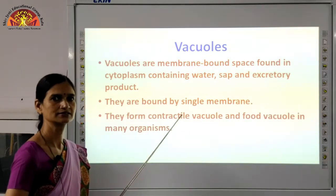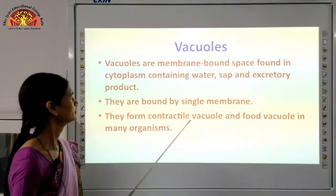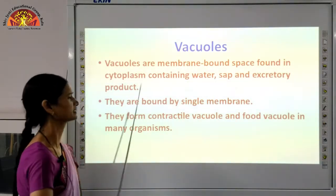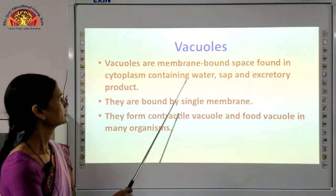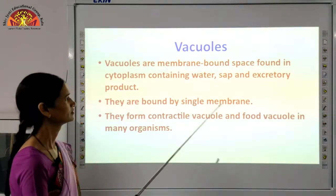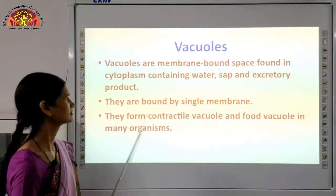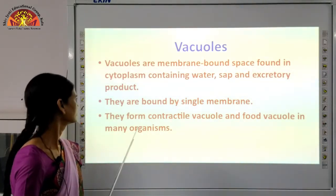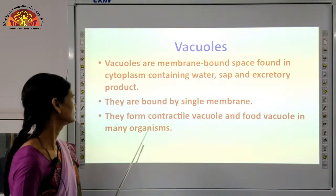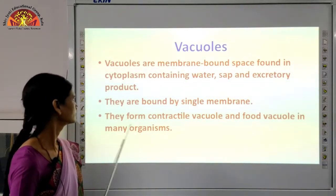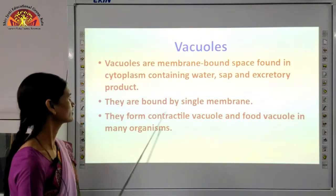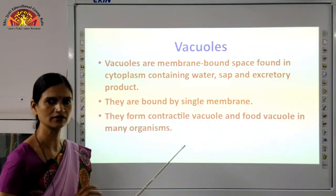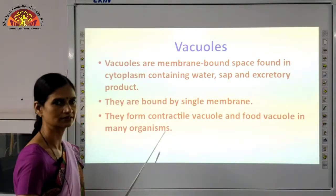Vacuoles are membrane-bound spaces found in the cytoplasm containing water, sap, and excretory products, which provide rigidity to the cell. They are bound by a single membrane. They form contractile vacuoles and food vacuoles in many organisms such as amoeba. Small vacuoles are also present in animal cells.